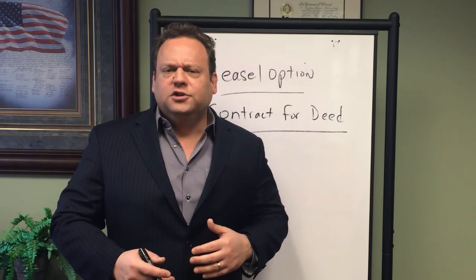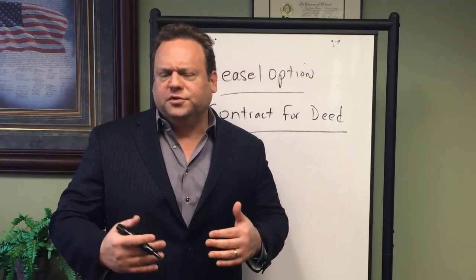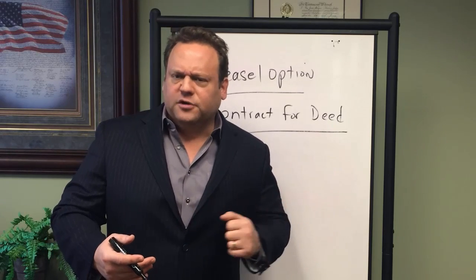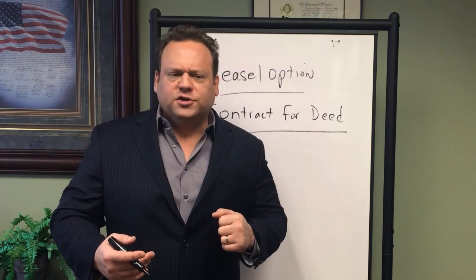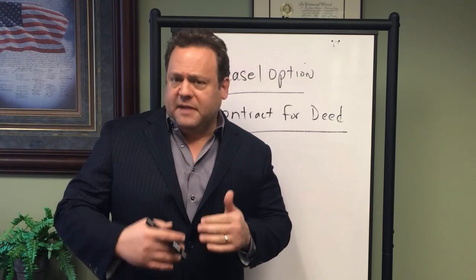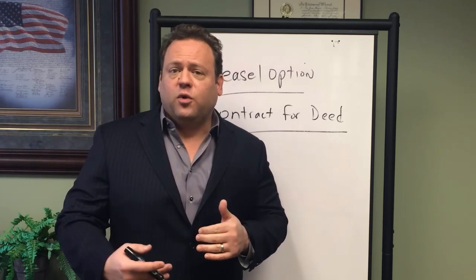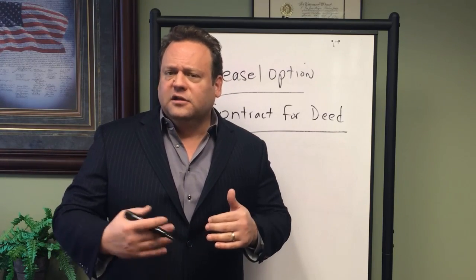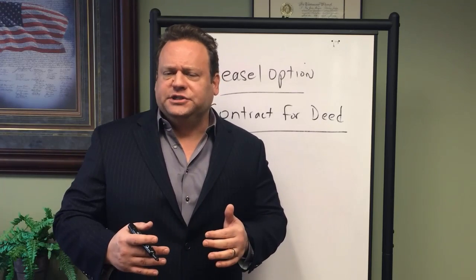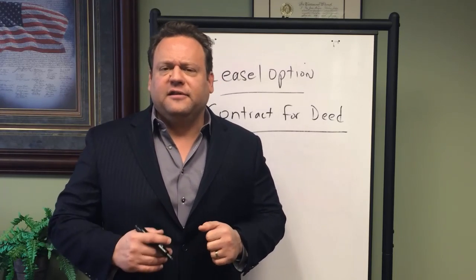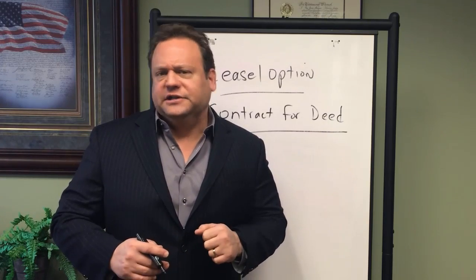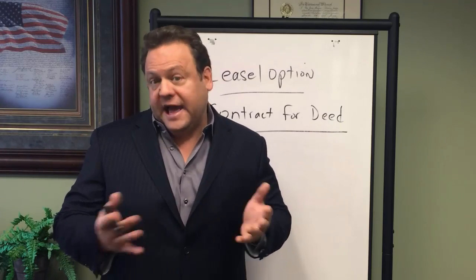But generally speaking, a short-term lease with option — 1, 2, 3, maybe even 4 years — with a fixed purchase price, even if there are some credits that the tenant will get for making payments towards the purchase price, still looks and smells more like a landlord-tenant relationship with a personal option that the tenant has to buy, which is not a sale until the option is exercised for tax purposes.